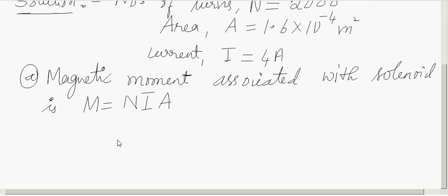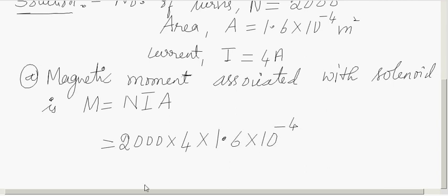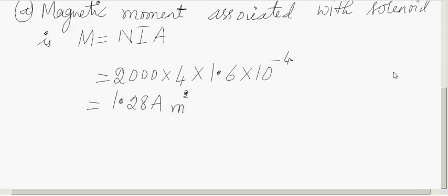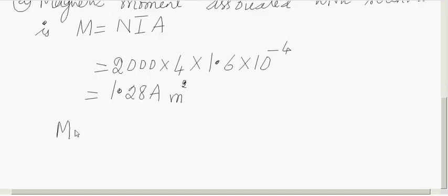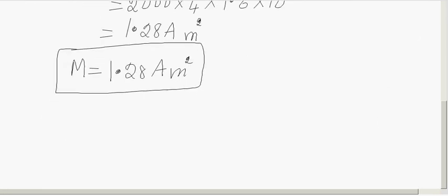Now substitute all the quantities. N is 2000, current is 4, and area of cross-section is 1.6 into 10 to the power minus 4. This gives us the value of M as 1.28. The unit is current multiplied by area, so ampere meter square. The magnetic moment associated with the solenoid is 1.28 ampere meter square.